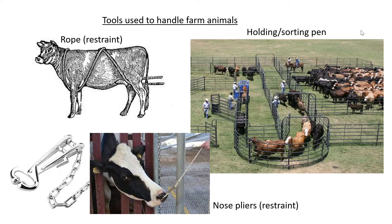A favourite exam topic is tools used during animal handling — they give you a picture and ask you to identify the tool, or give you the name and ask what it's used for. The first tool is a rope. The main function of the rope is to restrain an animal so that it does not move too quickly and can stand still to be handled. This picture shows how the rope is used throughout the body of the cow to allow it to stand still.